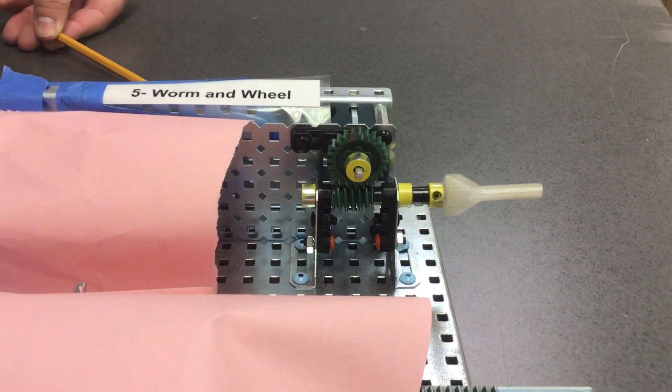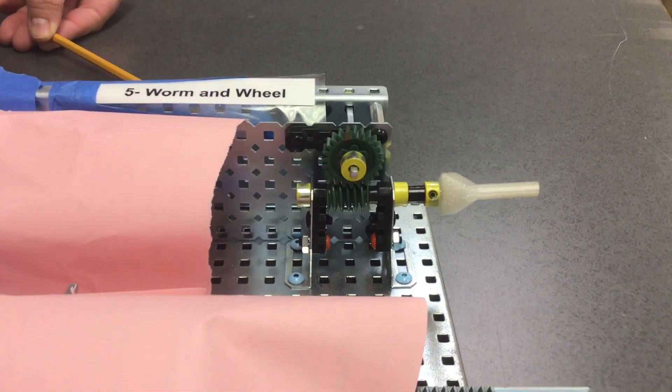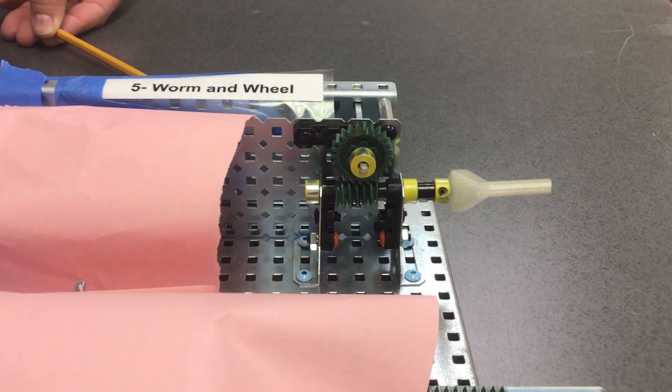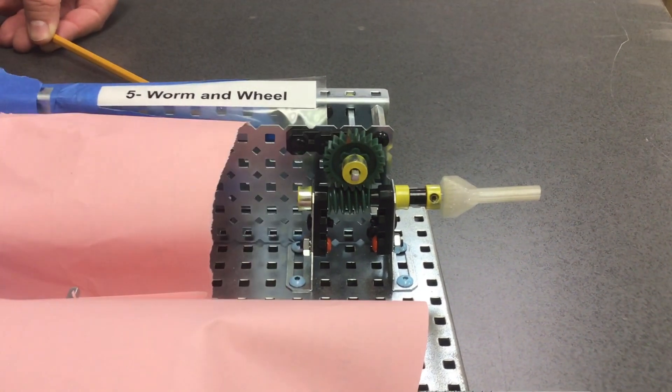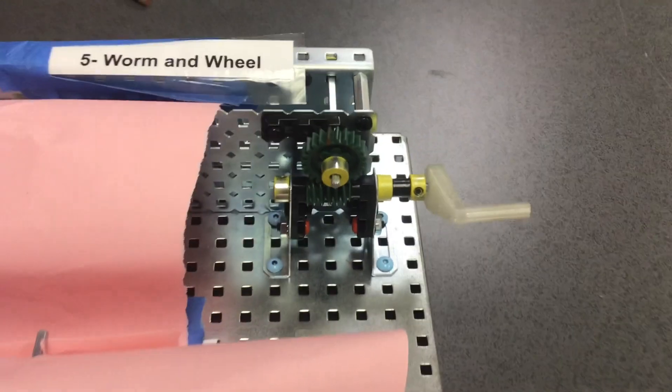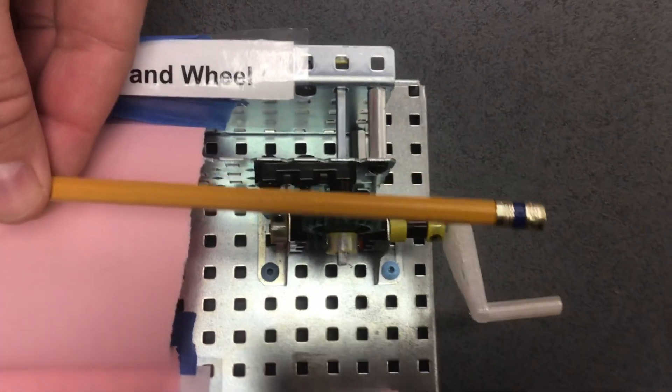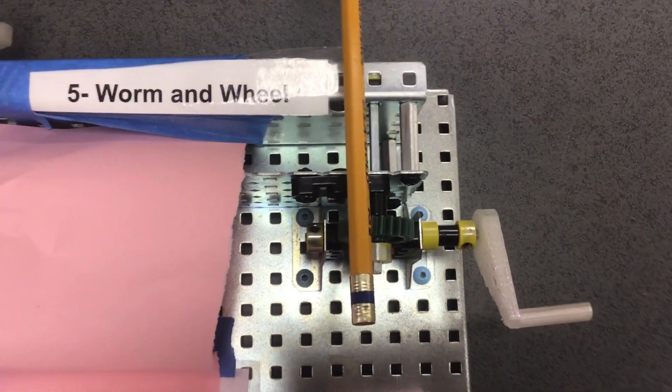So our angle of the shafts from input to output is 90 degrees intersecting. Maybe we get a top view just so you can see a downward view of that. Input to output.